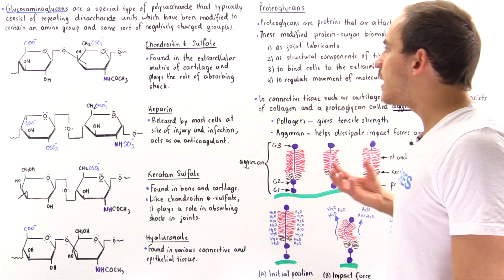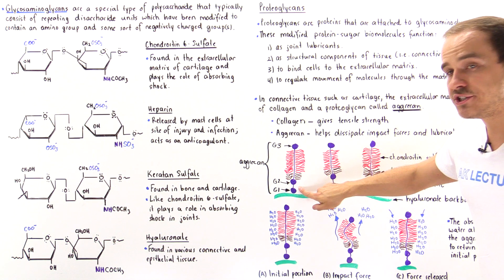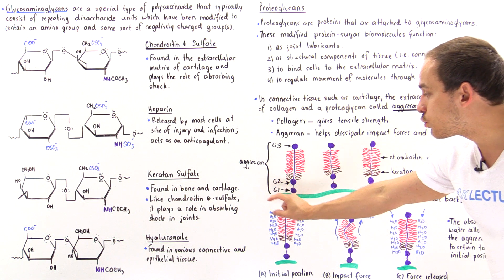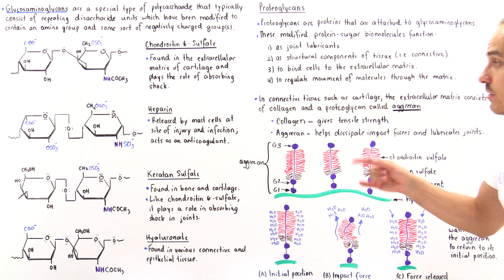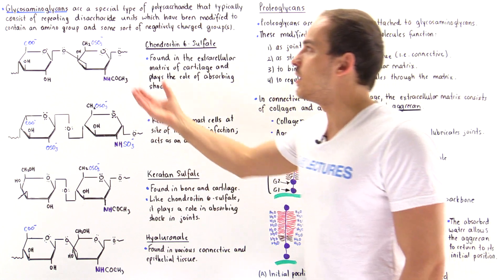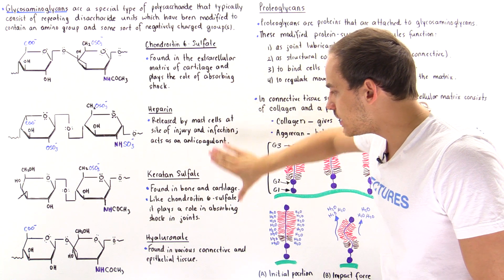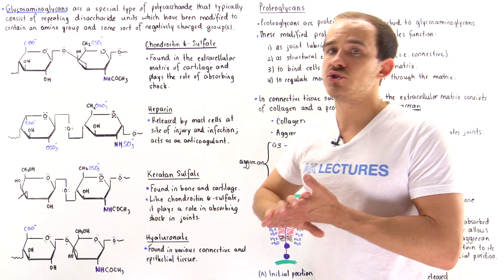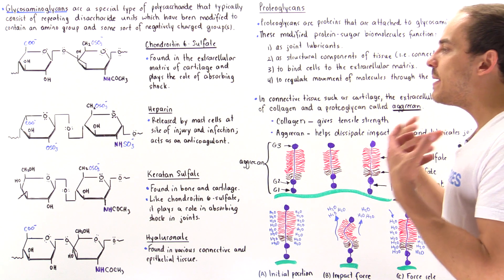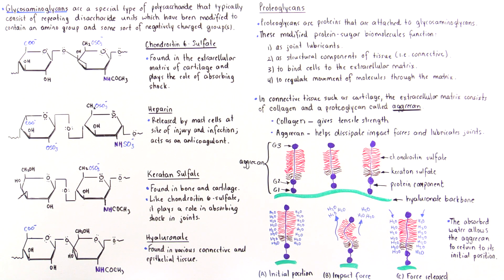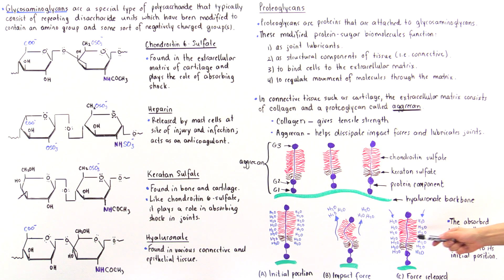The G1 domain of aggrecan is bound to a green fiber, which is hyaluronate — another glycosaminoglycan we mentioned previously. So three different glycosaminoglycans are found within the connective tissue of cartilage and inside our joints. Together, these components absorb and dissipate impact forces and prevent damage. The question is: how is this actually achieved? Let's look at the following three diagrams.